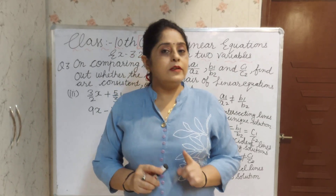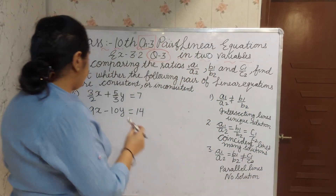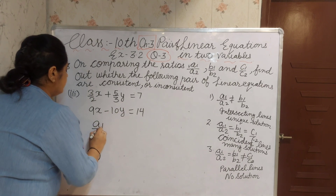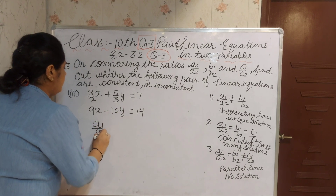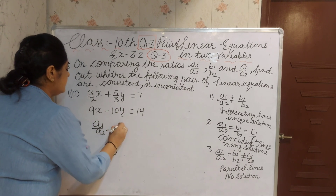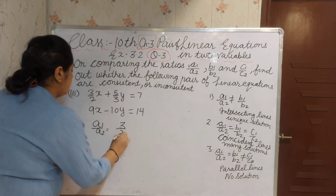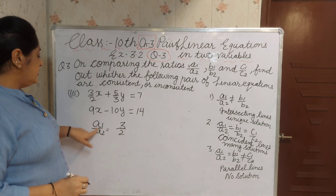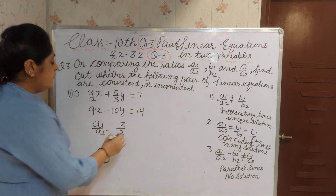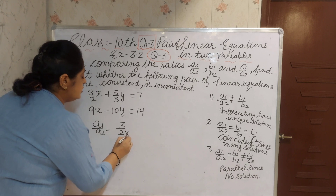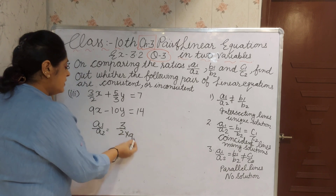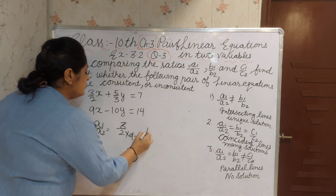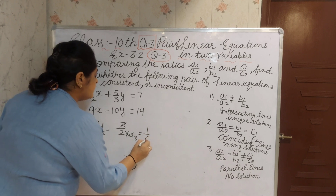Now the third sum, third part. First we calculate A1 by A2: 3 by 2 as numerator and 9 as denominator. Reducing the term, 3 ones and 3 threes, you will get 1 by 6 (actually 1 by 3). Actually reducing 3/2 over 9 gives 1 by 6.